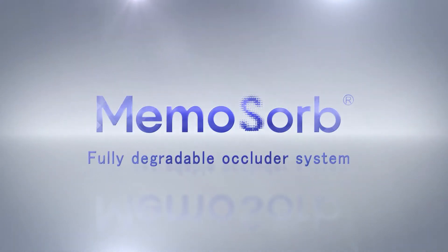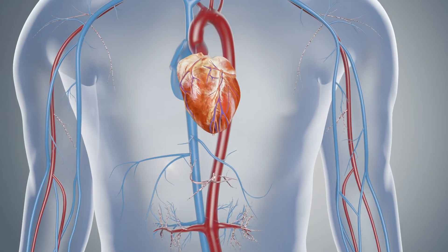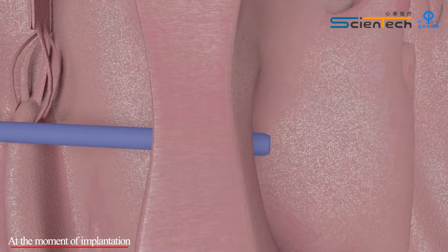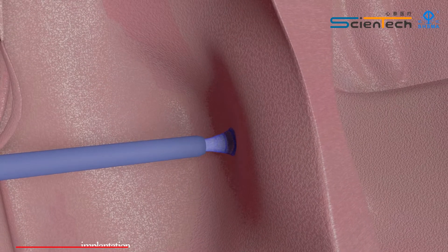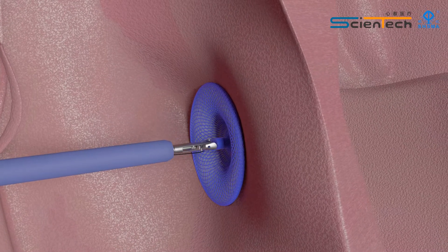MemoSorb, the first and only fully degradable occluder system. Without the use of x-ray, MemoSorb is delivered to the heart using its supporting delivery system. Immediately and completely blocks the hole after implantation.